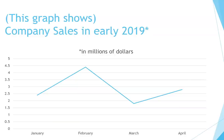Here's an example with a line graph. This graph shows company sales in early 2019 in millions of dollars. Sales started at around 2.5 million dollars in January. There was a sharp rise in February to nearly 4.5 million dollars. There was a dramatic decline in March to just under 2 million dollars. There was a slight increase in April to about 2.8 million dollars.